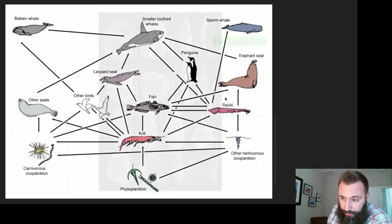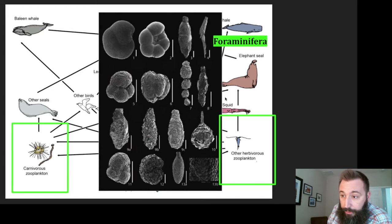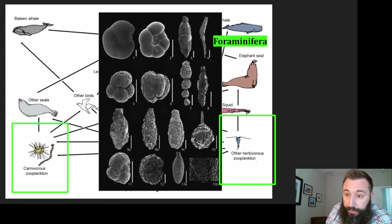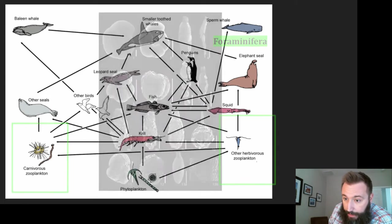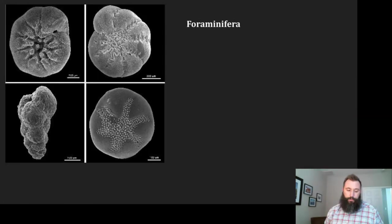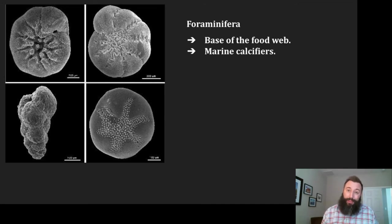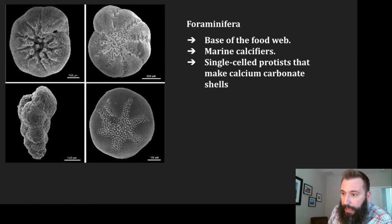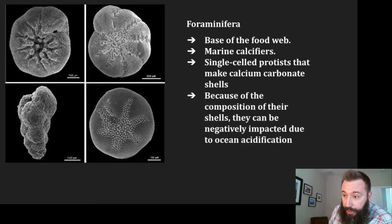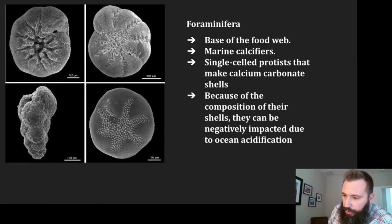In addition to coccolithophores, there are other types of plankton too. Some are called foraminifera — single-celled protists that live within shells they produce. The shells are made of calcium carbonate, so ocean acidification can impact these too. They make up part of the base of the food web and are marine calcifiers, meaning they produce a calcium carbonate shell or skeleton. Because their shells are calcium carbonate, they can be negatively impacted by ocean acidification.